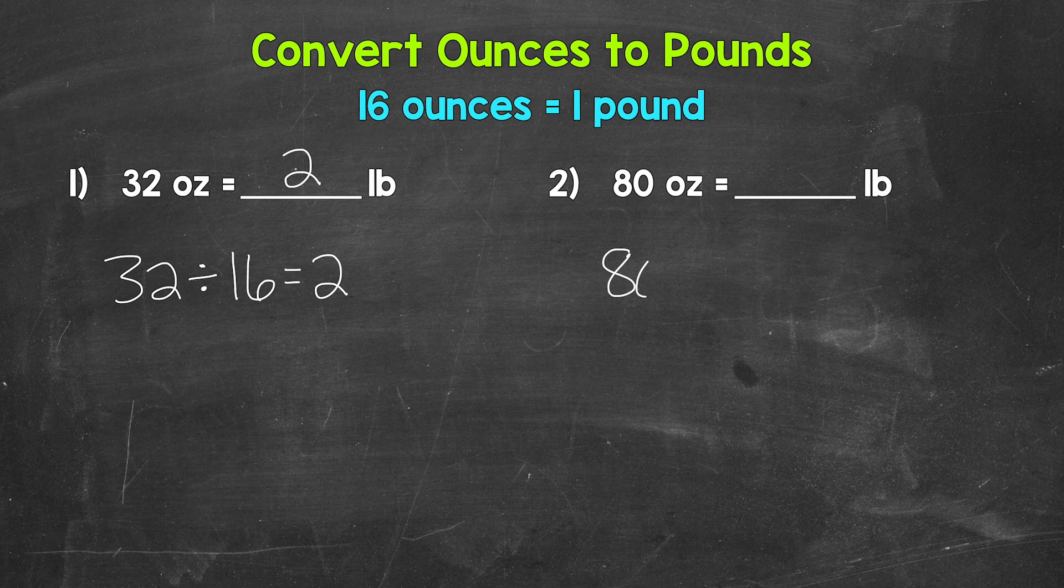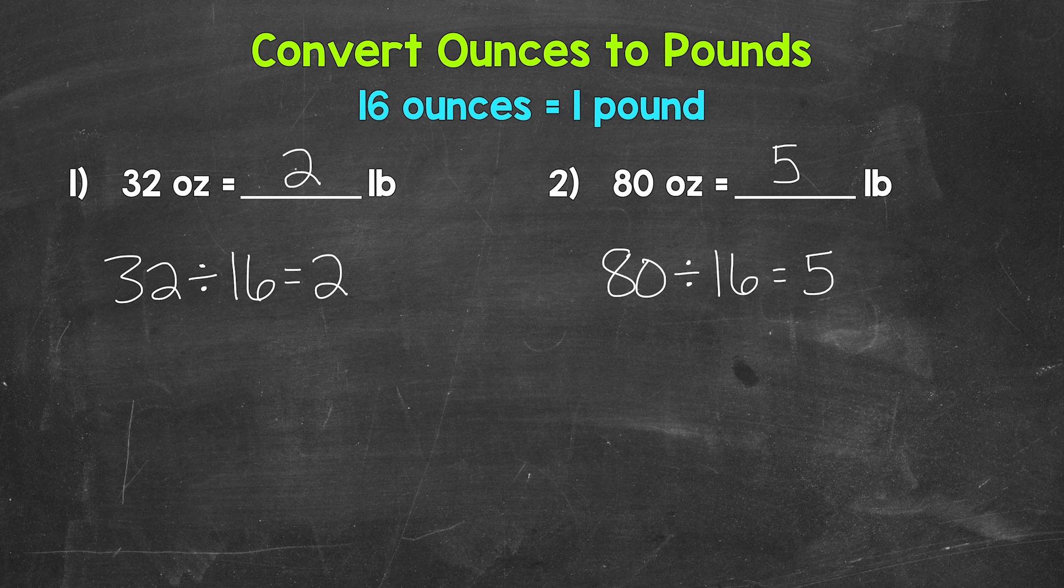We have 80 divided by 16. 80 divided by 16 gives us five. 80 ounces equals five pounds. So there you have it. There's how to convert ounces to pounds.